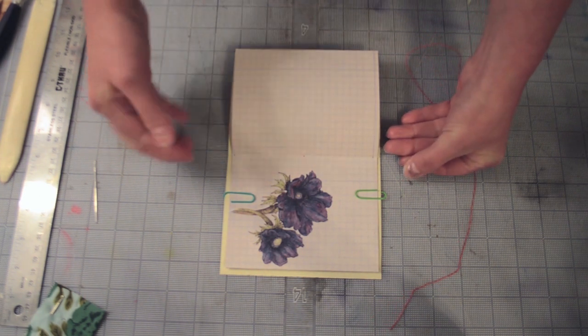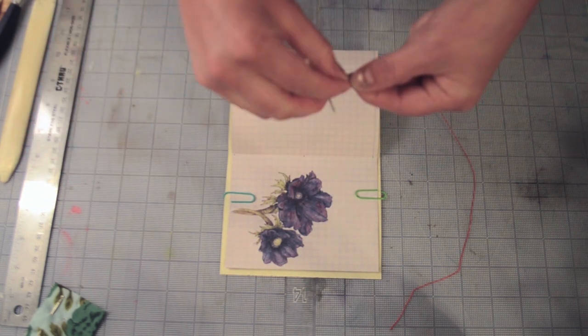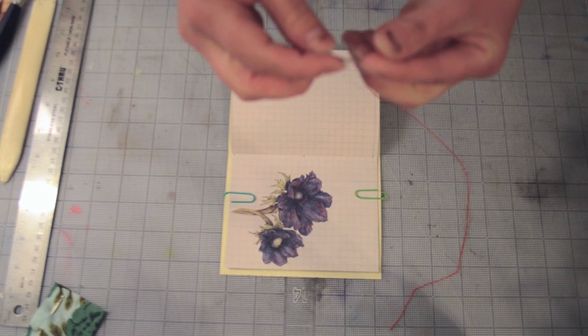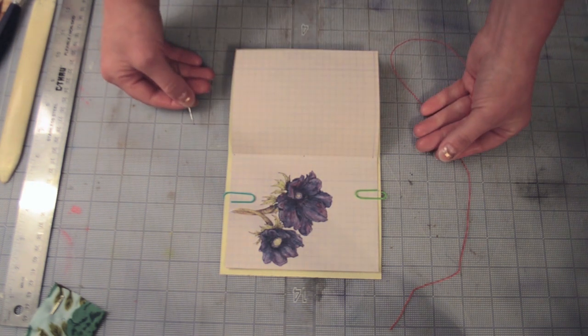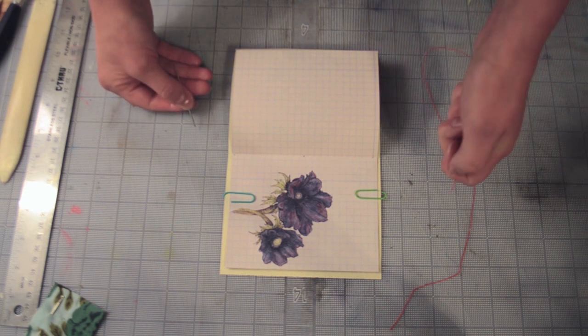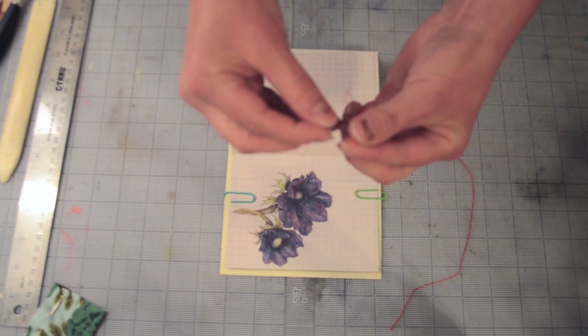This is kind of an optional step because especially for the pamphlet book, which is very thin - it's only one signature - the roughness of the thread isn't really going to be much of an issue. But it does help the thread glide through the pages much more easily. So you can thread your needle.